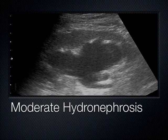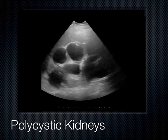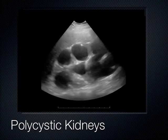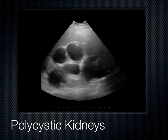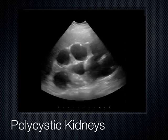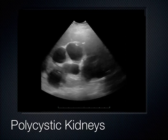Moderate hydronephrosis is where all the finger-like projections coalesce into one large hypo- or anechoic area in the pelvis of the kidney, though you can still make out cortex around the edges. Severe hydronephrosis — very rare — is when all you see is a big black center with no cortex remaining. Polycystic kidney disease shows multiple cysts throughout the cortex bilaterally, and it can also affect other organs such as the spleen, liver, and ovaries.